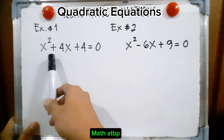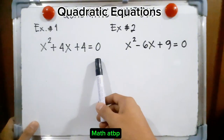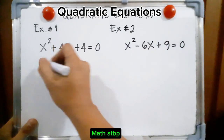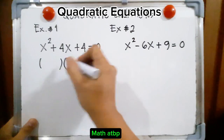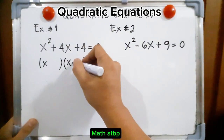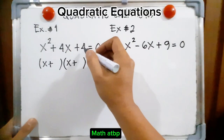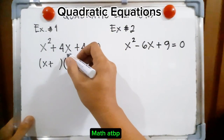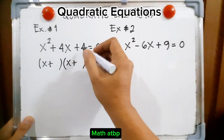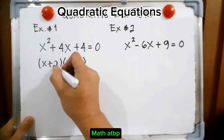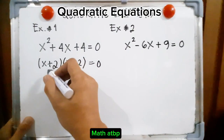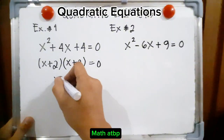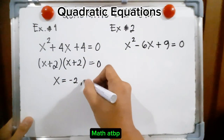Example number 1: we have x² + 4x + 4 = 0. Let us solve for x using factoring. The factors of x² are x and x. Since we have positive and positive, both signs must be positive. The factors of 4 are 4 and 1, or 2 and 2. Using 4 and 1 gives a middle term of 5x, so we use 2 and 2. So we have (x + 2)(x + 2) = 0, giving x = -2 and x = -2.